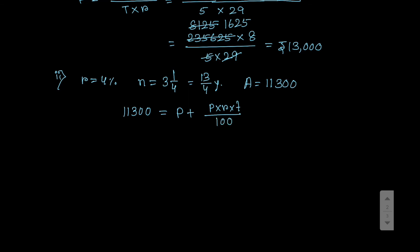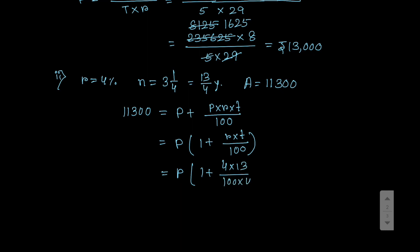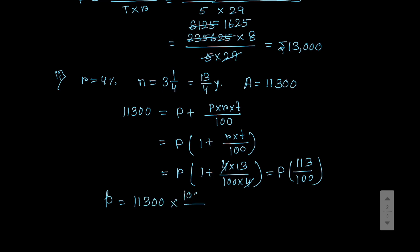Since Amount equals Principal plus Interest, that means 11,300 equals P plus PRT by 100, so P times (1 plus RT by 100). Substituting R equals 4 and T equals 13 by 4: 4 and 4 cancel, giving 1 plus 13 by 100, which equals 113 by 100. So P into 113 by 100 equals 11,300, giving P equals 11,300 into 100 divided by 113 equals 10,000. So 10,000 is your final answer. If you like my video please share and subscribe to my channel.